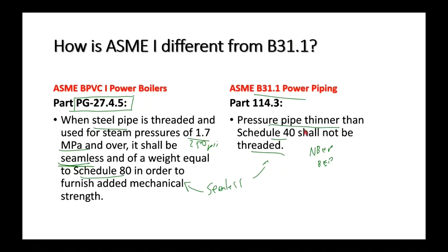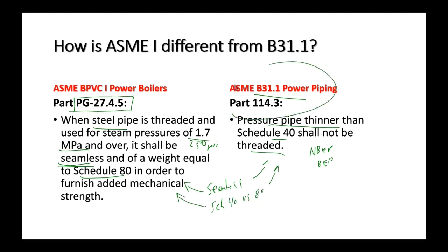Section I says Schedule 80; B31.1 says it can't be thinner than Schedule 40. So there are two differences: seamless requirement and minimum schedule. B31.1 is more lenient than ASME Code Section I.